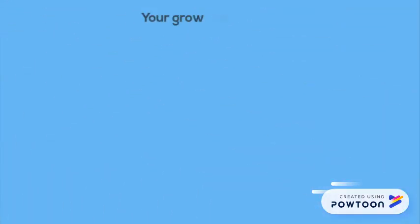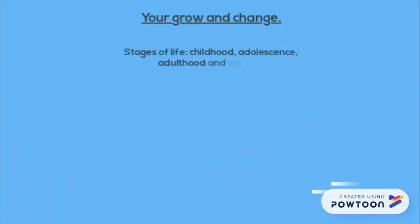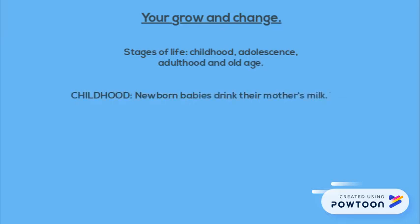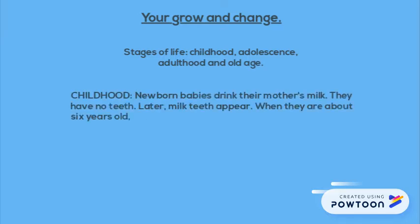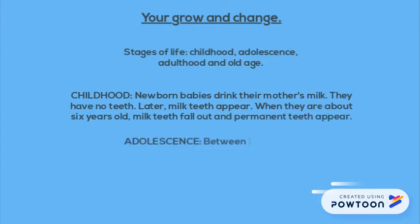There are four stages of life. The first one is childhood. Newborn babies drink their mother's milk. They have no teeth. Later milk teeth appear. When they are about six years old, milk teeth fall out and permanent teeth appear.